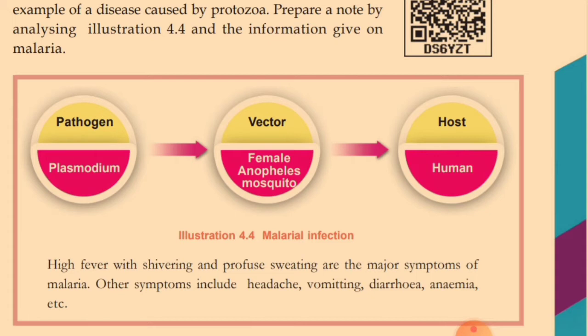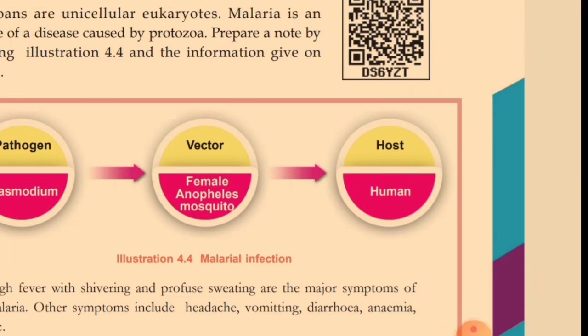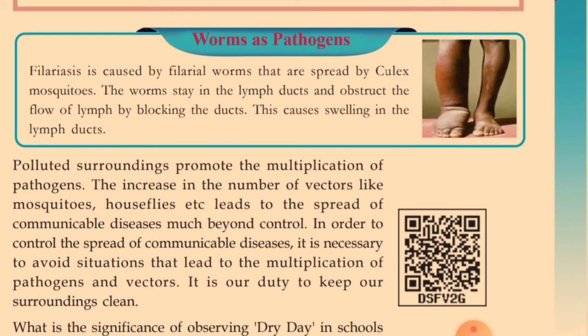The symptoms mainly include headache, vomiting, diarrhea, and anemia. These are all about the protozoan disease malaria. Next we move on to worm diseases — that is, worms as pathogens.